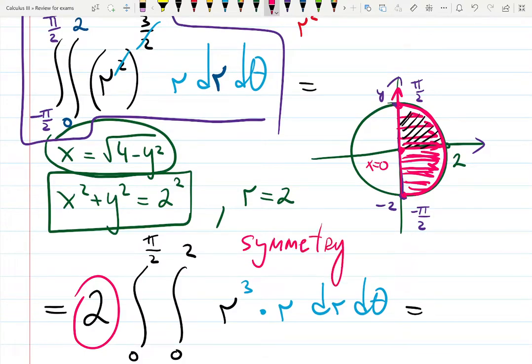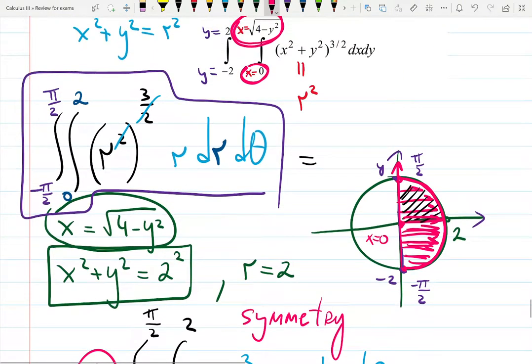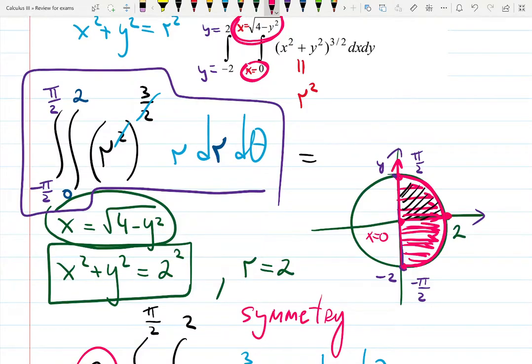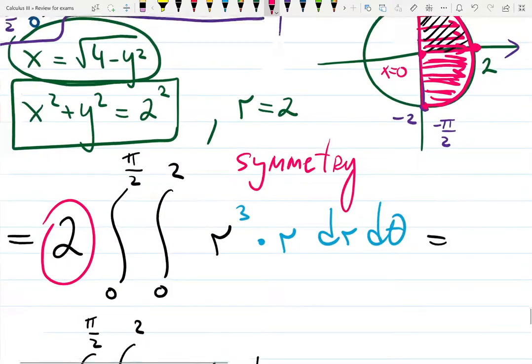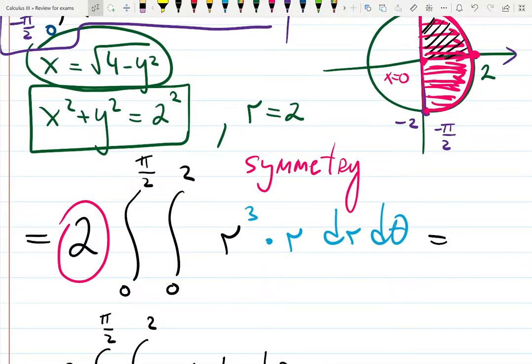And radius is only stuck between 0 and 2. And that's what gave me the integral we have over here. From 0 to pi over 2, from 0 to 2.